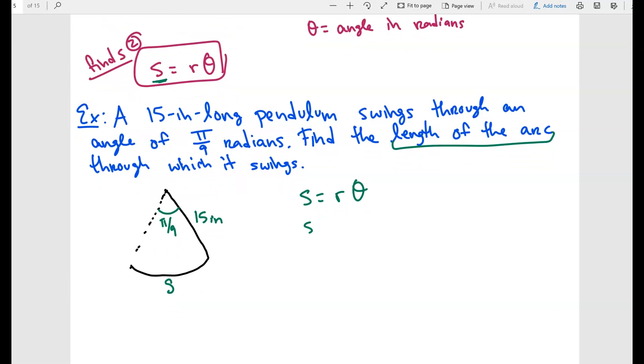So in this case, our radius of this particular pendulum is going to be however long it is. Because if you think about it, if I were to swing this all the way around, it'll form a circle. And this is just going to be the center of this particular circle, which is 15 inches. So R in this case is going to be 15, theta is going to be π over 9. And I put this in my calculator and I'm going to get 5π over 3.